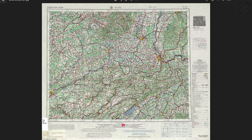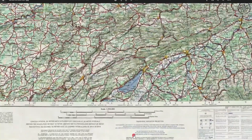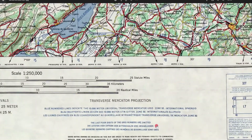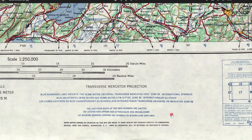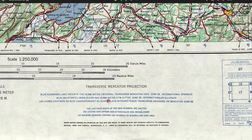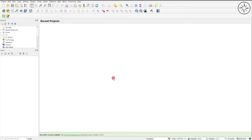Before opening QGIS we are going to look for the coordinate system of our topographic map. To do this, go to your topographic map and look at the legend. As you can see, the projection of our map is Transverse Mercator — more specifically, Universal Transverse Mercator Zone 32 North. This information is key in our georeferencing operation.